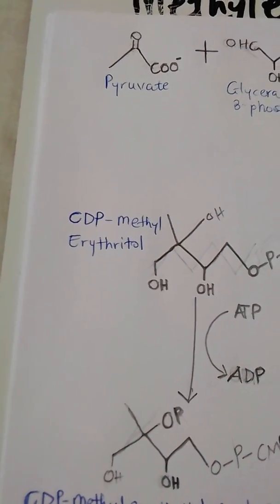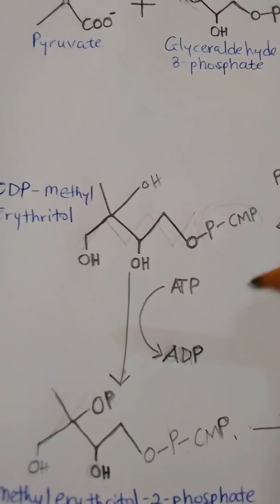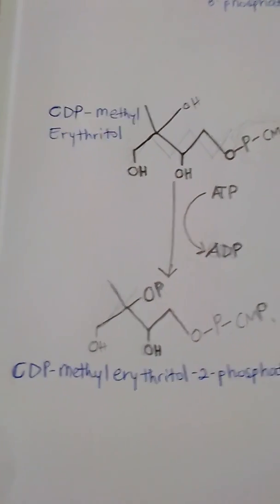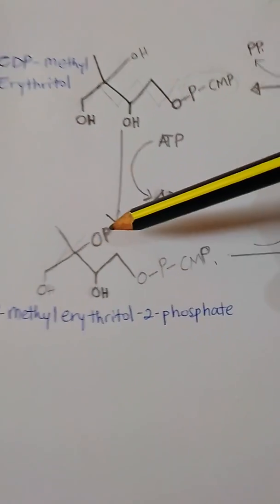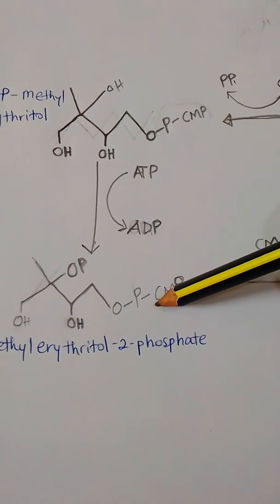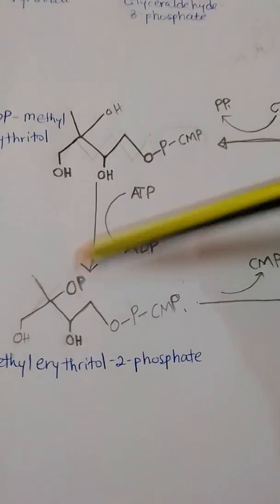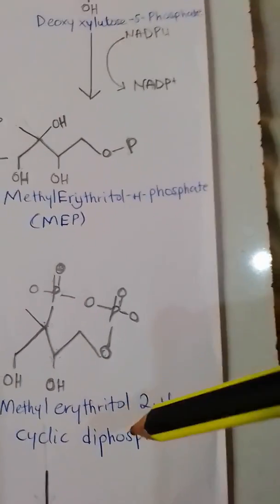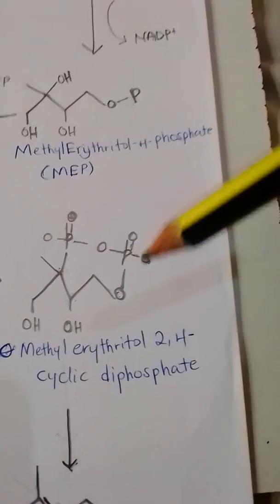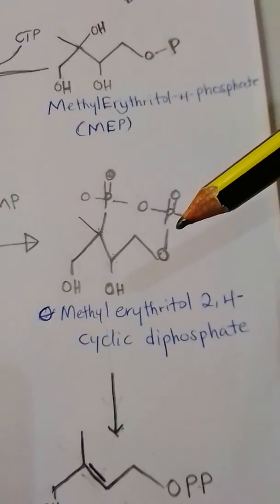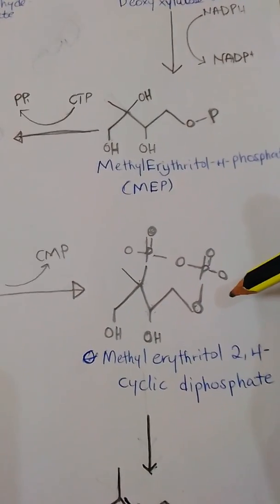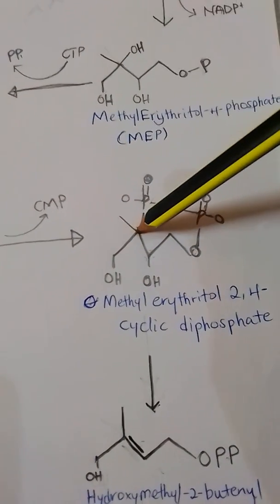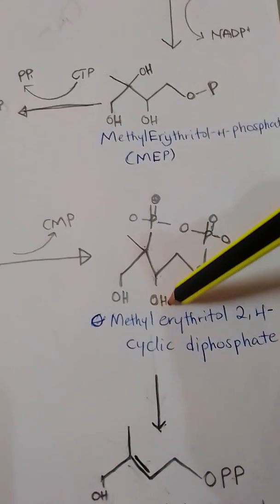This produces CDP-methylerythritol. Next, there is phosphorylation from ATP to produce CDP-methylerythritol 2-phosphate. The following reaction is loss of CMP, cytidine monophosphate, followed by cyclization of the two phosphate groups to form methylerythritol 2,4-cyclic diphosphate. Then the phosphate group is pulled to the terminal phosphate group to form a diphosphate at the end, and a dehydration reaction forms a double bond.